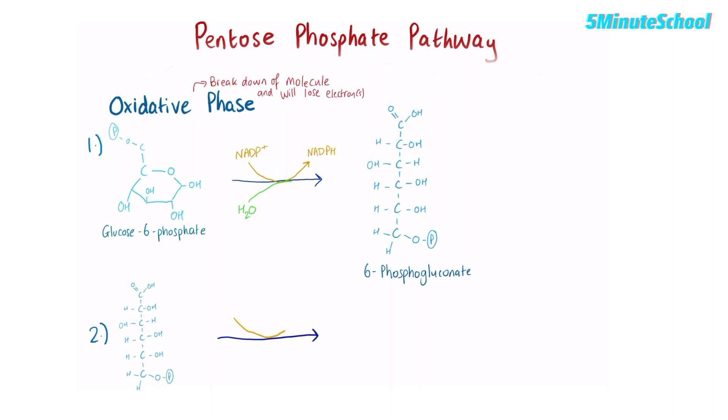Next, a carbon is removed from the 6-phosphogluconate and carbon dioxide is released. The electrons which are released from the reaction are used to reduce this NADP plus back to NADPH. So now, if you look at the diagram here, you can see we're left with this five-carbon molecule called ribulose 5-phosphate. That's the oxidative phase done.